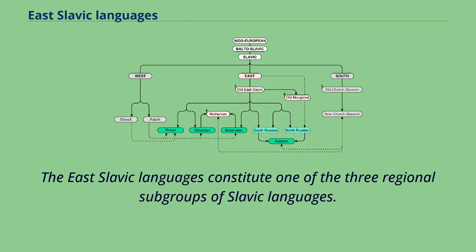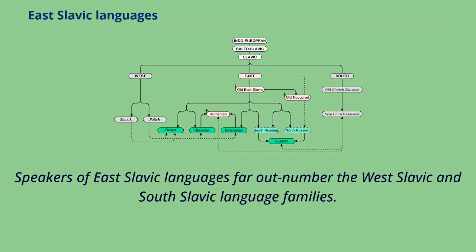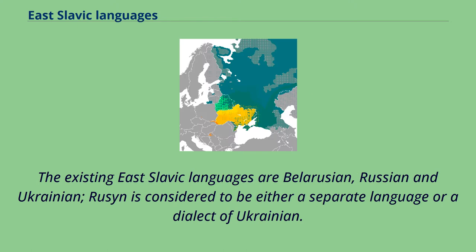The East Slavic languages constitute one of the three regional subgroups of Slavic languages. These languages are currently spoken natively throughout Eastern Europe and extend eastwards to Siberia and the Russian Far East, while also being spoken as a lingua franca in many regions of the Caucasus and Central Asia. Speakers of East Slavic languages far outnumber the West Slavic and South Slavic language families. The existing East Slavic languages are Belarusian, Russian, and Ukrainian.